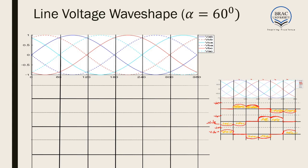Now let us look at line-to-line voltages. This graph would be VAB, this graph would be VBC, and this graph would be VCA. VAB equals VA minus VB. For the first 60-degree interval, VA is 0 and VB is minus VCB over 2, so VAB equals 0 minus (minus something), which gives plus VCB over 2, that is VLL over 2. For the next 60 degrees, VAN equals positive VLL over 2 and VBN equals minus VLL over 2, so VAB equals VLL over 2 minus (minus VLL over 2), giving VLL.